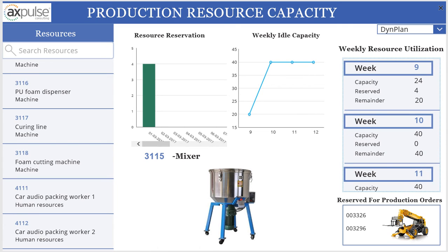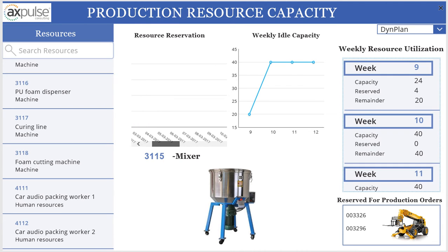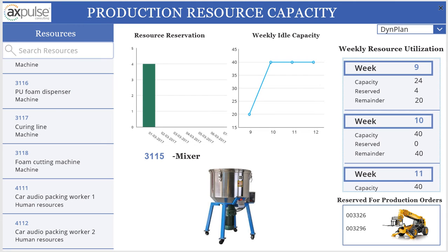On this section we have provided two charts. This particular chart shows the resource reservation. If you look at the horizontal axis, you will see the date, and on the y-axis there is the reserved capacity. For example, for March 1st, you have the reservation for this resource as four hours, and you can also verify that from the list here.